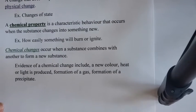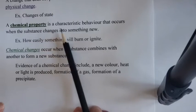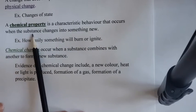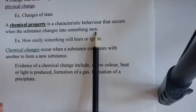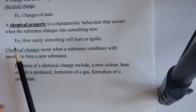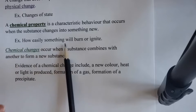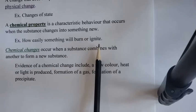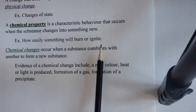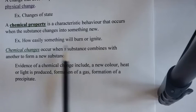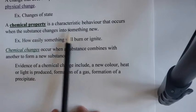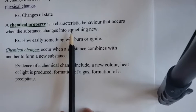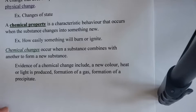Next, we have chemical properties. A chemical property is a characteristic behavior that occurs when the substance changes into something new. For example, a chemical property would be how easily something will burn or ignite. If I take gasoline, I can make that catch on fire pretty easily. If I take a rock, even if I bring a torch to it, it's not going to catch on fire. So it's things we see happen when a substance changes into something new.